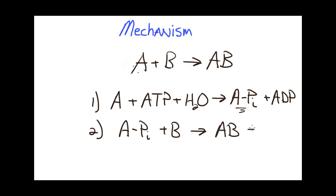So the mechanism of forming AB is by first forming this A-phosphate complex, which then has a thermodynamically favored reaction with B to form the product of interest. Now, if this mechanism is valid, it must add up to the overall reaction that we got from coupling the reactions earlier in the video.